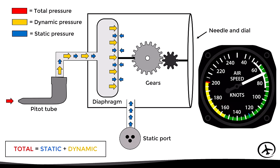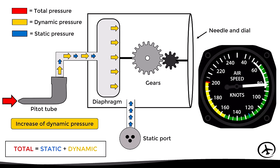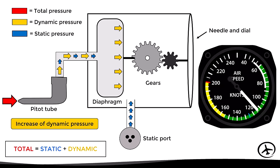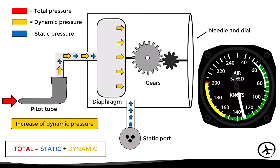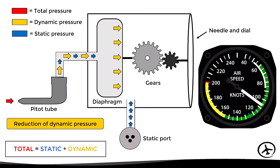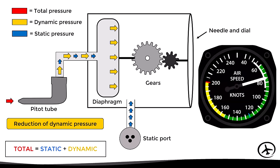Total pressure is static pressure plus dynamic pressure, so part of the pressure inside the diaphragm is dynamic and part is static. Since the static pressure inside the diaphragm equals that outside, they cancel out, leaving only dynamic pressure. The expansion or contraction of the diaphragm depends only on dynamic pressure. If dynamic pressure increases, the diaphragm expands, making the gears move the needle to indicate a higher speed; if dynamic pressure decreases, the diaphragm contracts, moving the needle to indicate a lower speed.